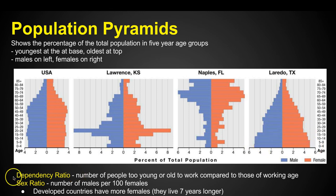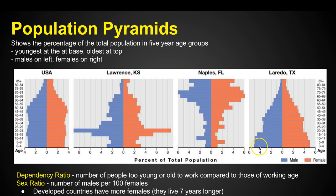The dependency ratio is the number of people too young or too old to work compared to those of working age. In Naples, Florida, the young people who can work are not going to be able to support that older population — there are too many of them. Same in Laredo, Texas — the older generation is not going to be able to keep working and support all those babies.